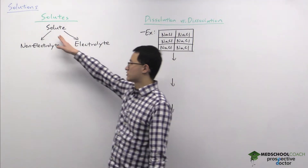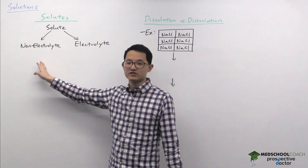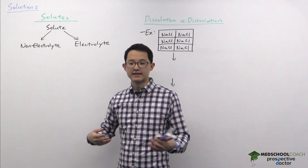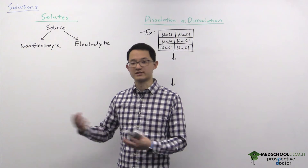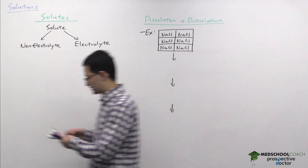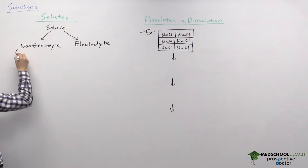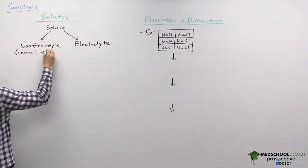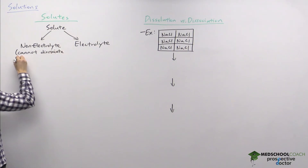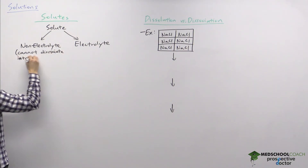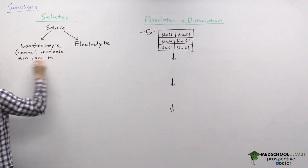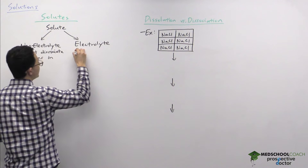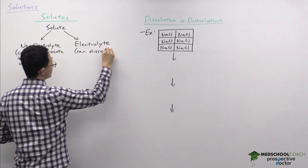The first way we can classify solutes is as electrolytes versus non-electrolytes. With the term electrolytes you should be thinking of conducting electricity, thinking of charges and ions. Non-electrolytes are solutes that cannot dissociate into ions in solution, in contrast to electrolytes that can dissociate into ions in solution.